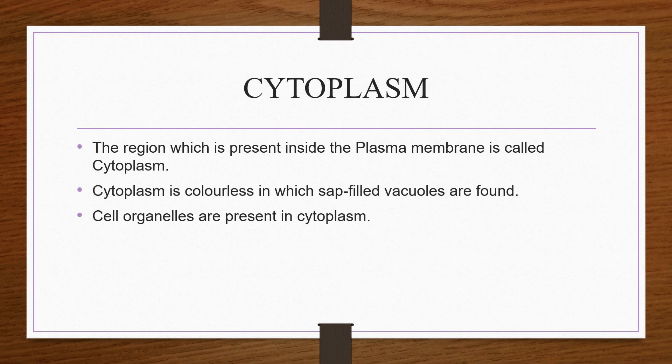Cytoplasm. The cytoplasm is the region present inside the plasma membrane. It is colorless and contains fat-filled vacuoles. Cell organelles such as the nucleus, endoplasmic reticulum, mitochondria, ribosomes, Golgi apparatus, inclusions, and gas vacuoles are all present within the cytoplasm.